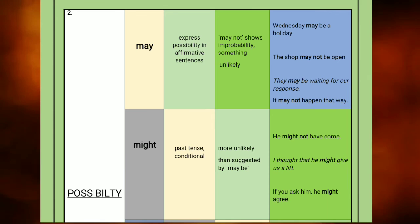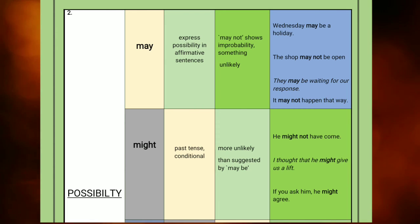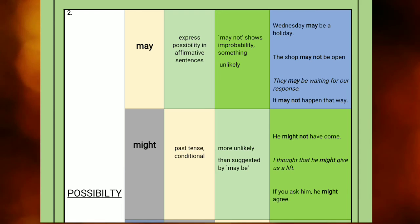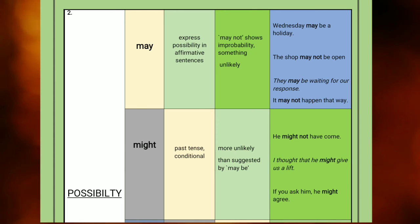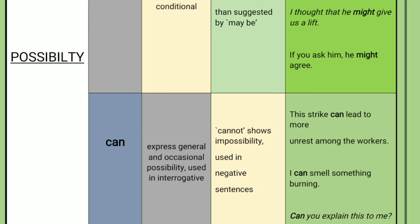Might is the past tense of may and is more unlikely than suggested by may. The difference between may and might is: you use may when you are fairly sure about something, and might when you are less sure. Example: 'He might not have come' — you are not sure whether he came or not. 'He might come or he might not come.'